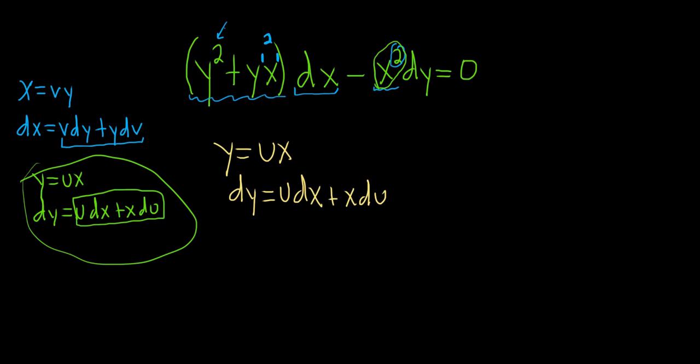Okay, let's be really careful. So y is equal to ux. So I'm going to put a parenthesis here, and then ux squared, and then plus. Then we have another y, so ux, and then x, and then dx. Yeah, dx is okay, because we're using this one. Minus x squared, and then dy is u dx plus xdu, and then parentheses and equal to zero.